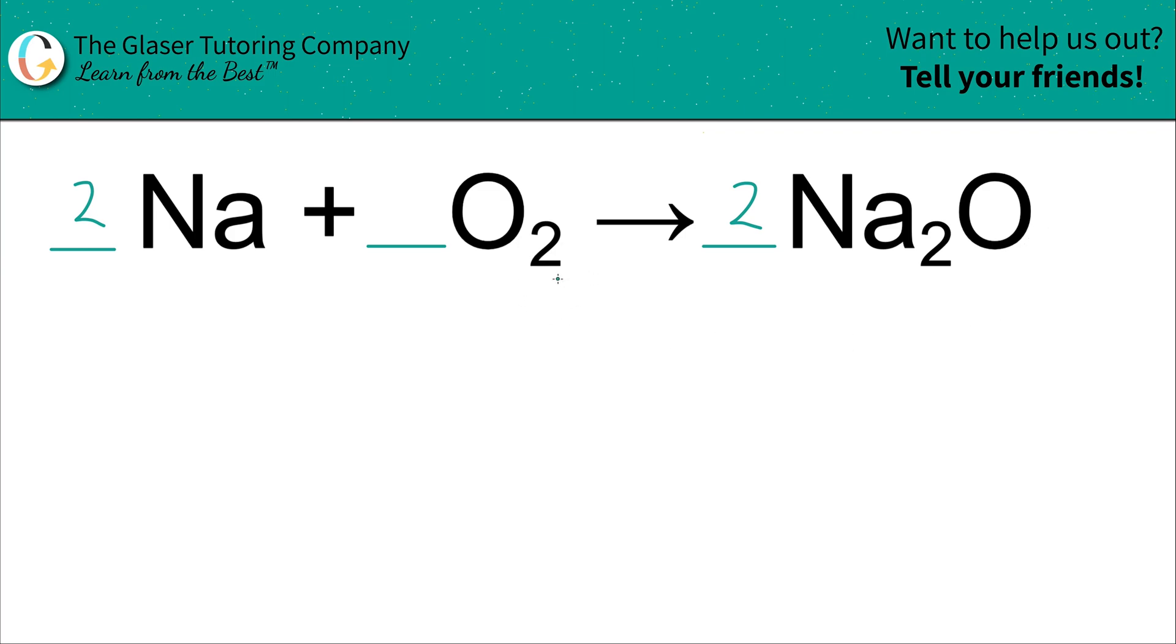Now, you might say, oh, goody gumdrops, I'm done. But wait a minute. You balance the oxygen over here. That's great. But now you screwed up the sodium value, right? Two times two is what? Four. You now have four sodium on the right. And you're like, oh, no, I got two sodium on the left. What am I going to do?